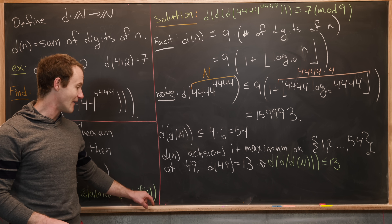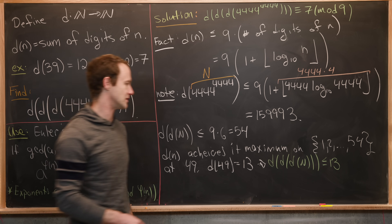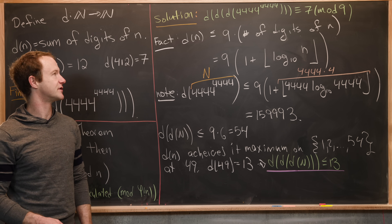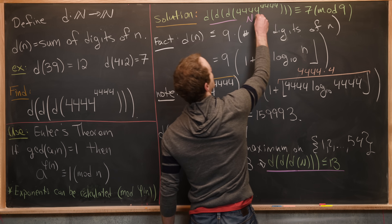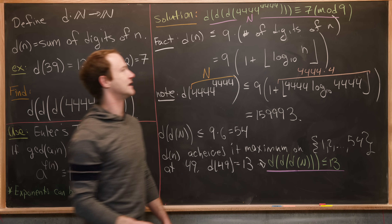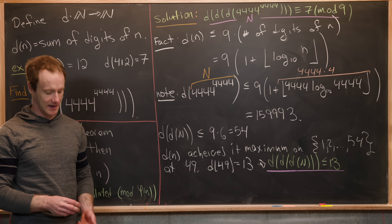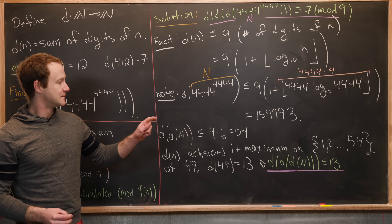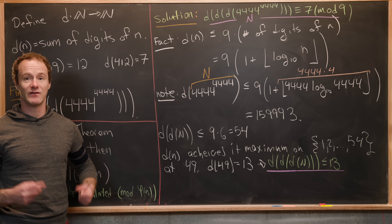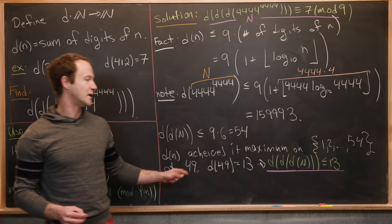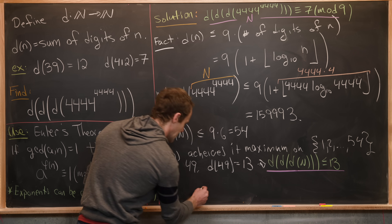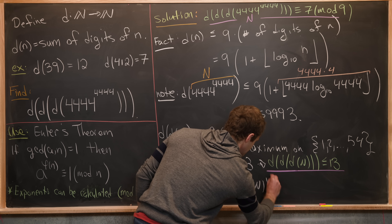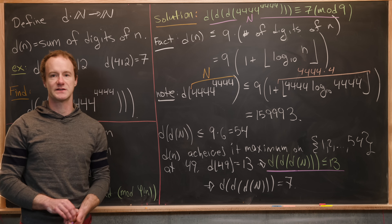Now we have everything we need. We know d(d(d(N))) ≤ 13, and we know d(d(d(N))) ≡ 7 mod 9. The only number between 1 and 13 that is congruent to 7 mod 9 is 7 itself. Therefore d(d(d(4444^4444))) = 7.